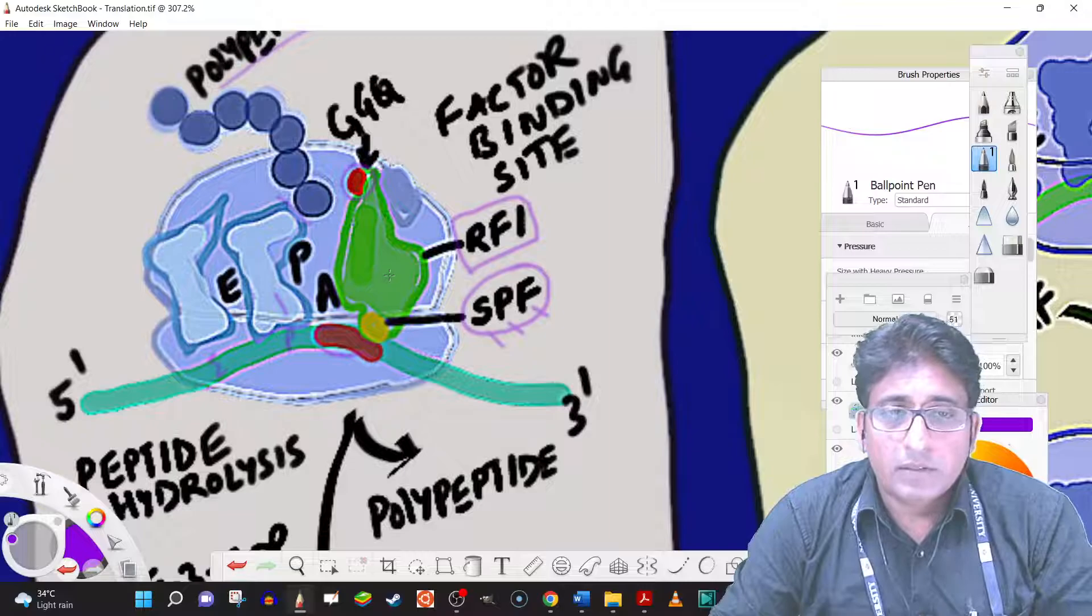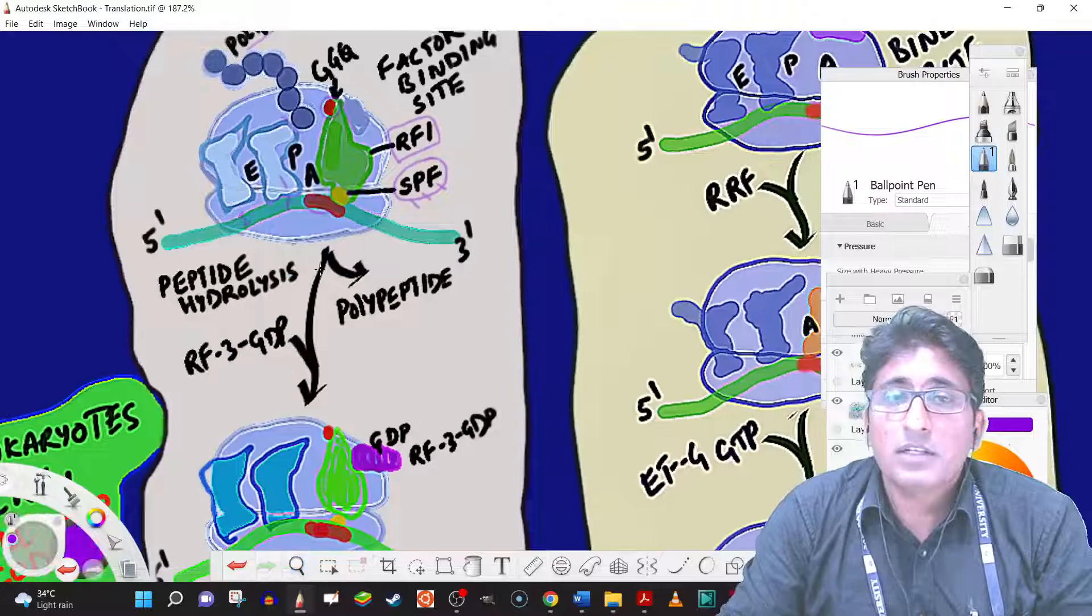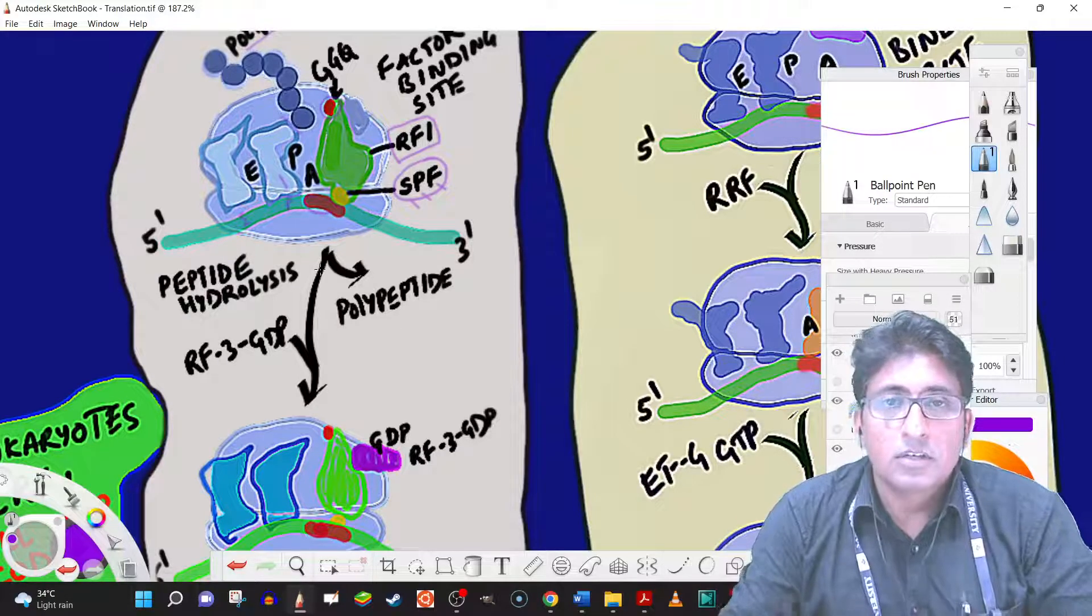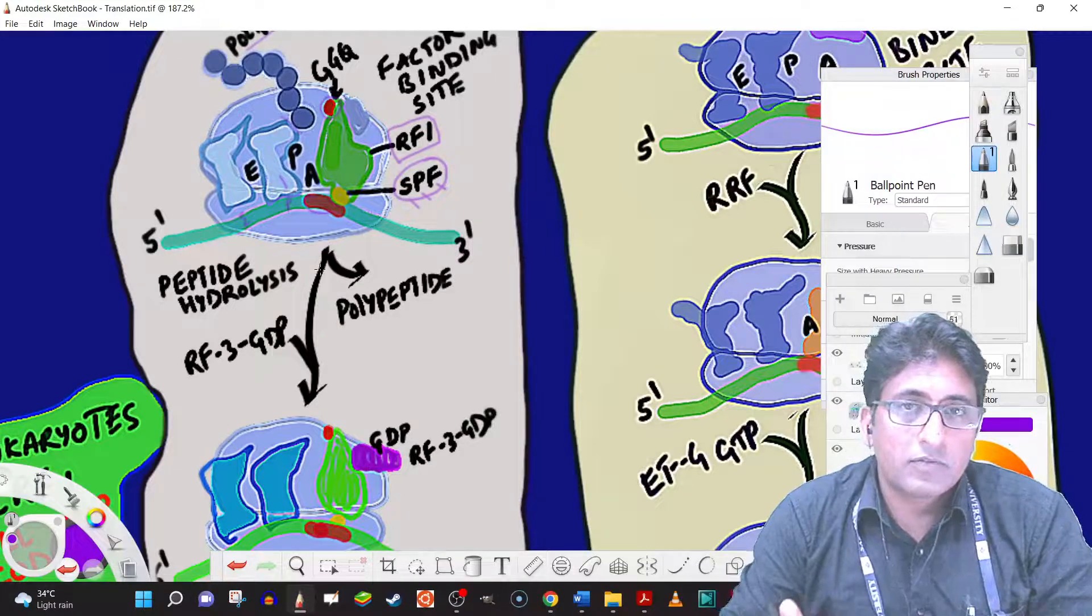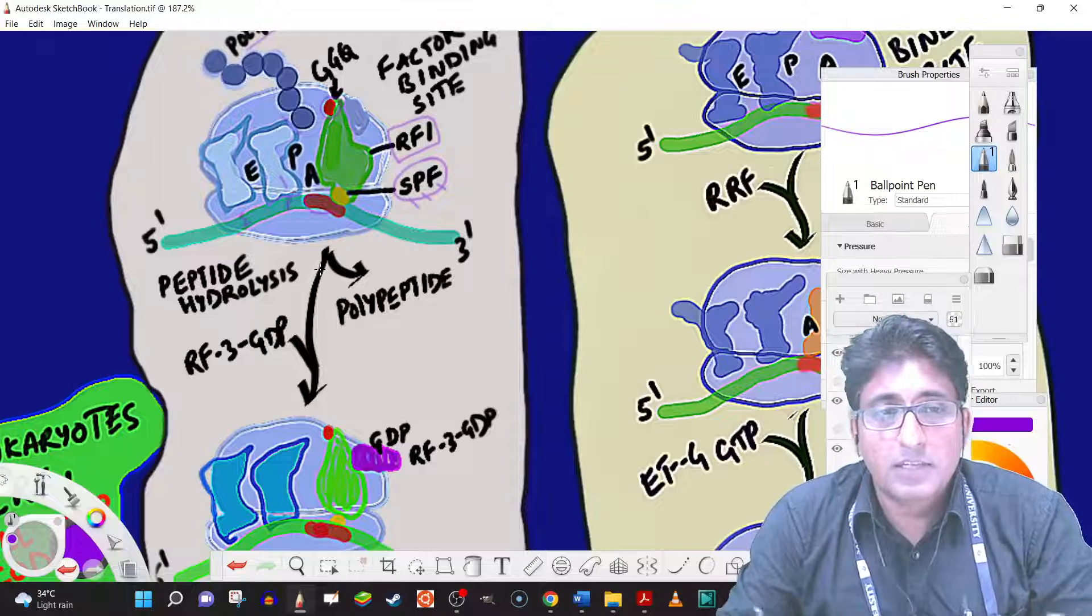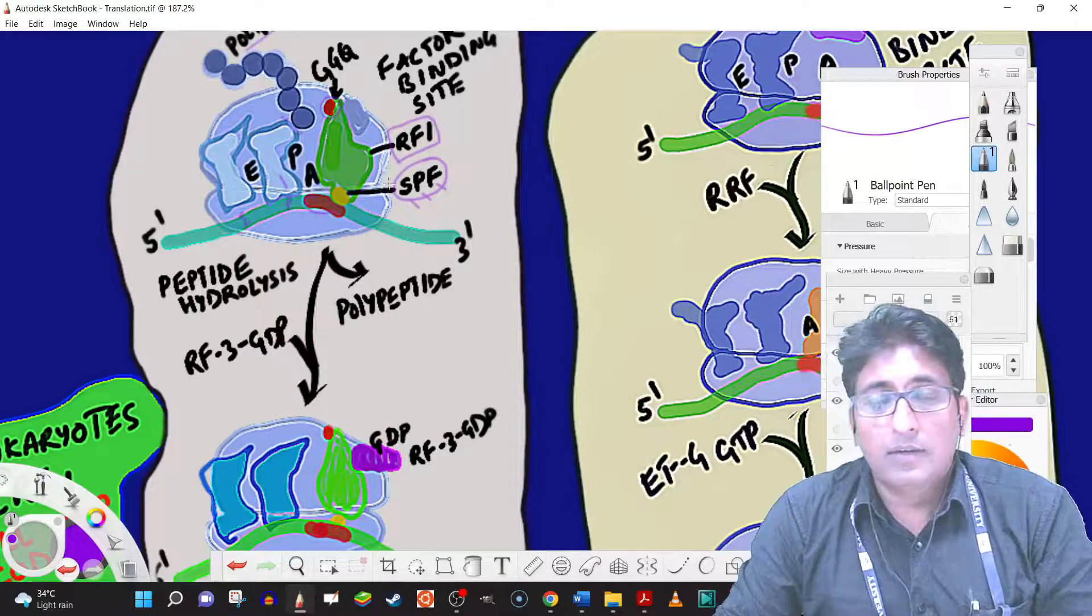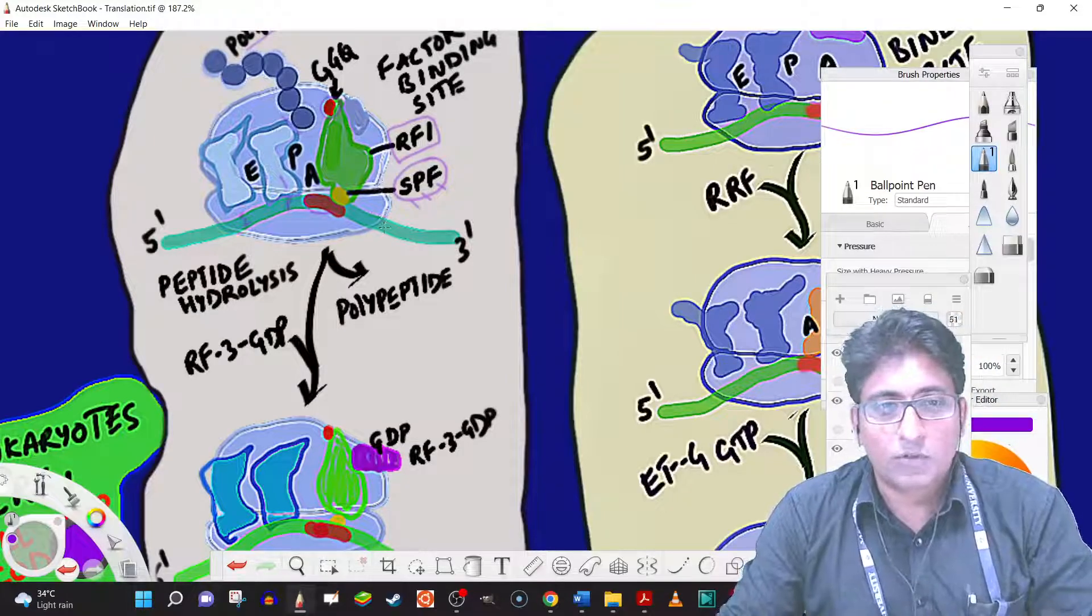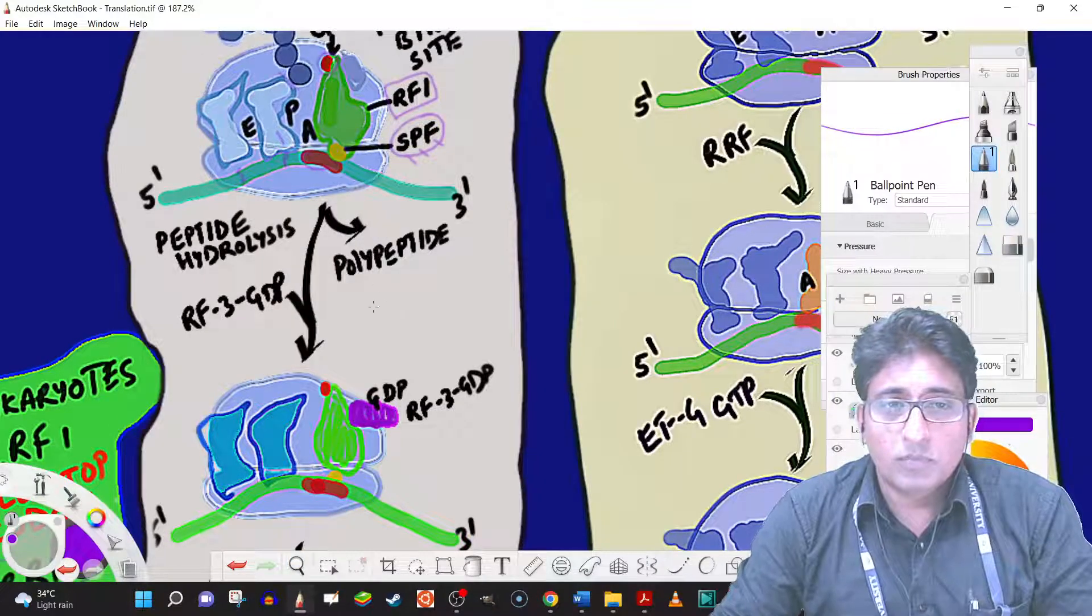So the release factor is recognizing stop codon. And it is nice to recollect that the stop codons do not have any corresponding tRNAs. So when the stop codon comes there in the A site, the A site will be left without being bound by anything for a long time. That is the time release factor 1, class 1 release factors come in. So in this case it is RF1. And RF1 has peptide anticodon and the GGQ motif. So by virtue of the GGQ motif the polypeptide is released.